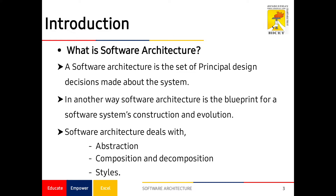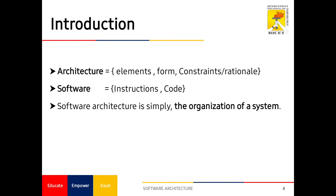A software architecture is like a blueprint used to design a software based on principles. In another way, it is a blueprint for a software system for construction and evaluation of individual attributes. It also consists of abstractions, composition, and decomposition of attributes and styles. Architecture is the combination of elements, forms, and their constraints. Software is a set of code or instructions written by a programmer. Simply, software architecture is the organization of a system.